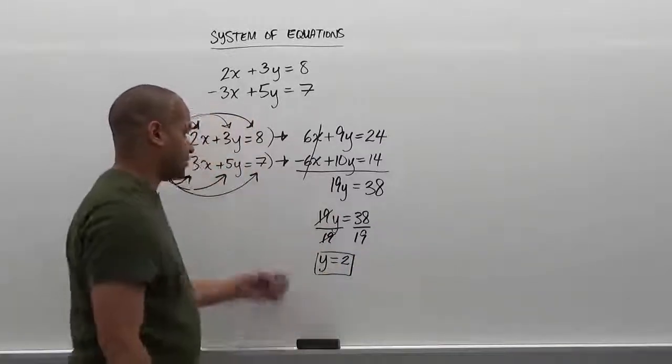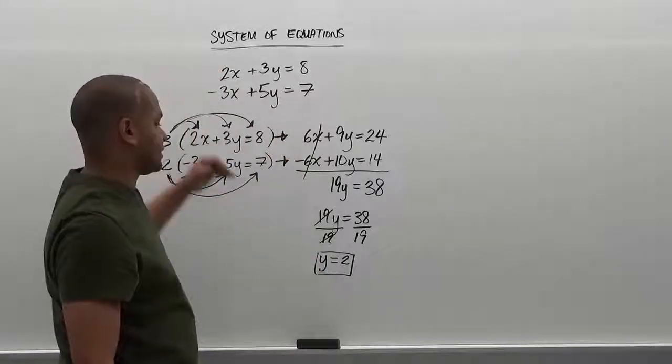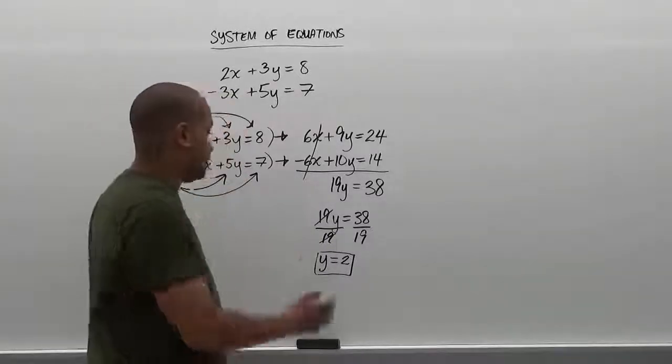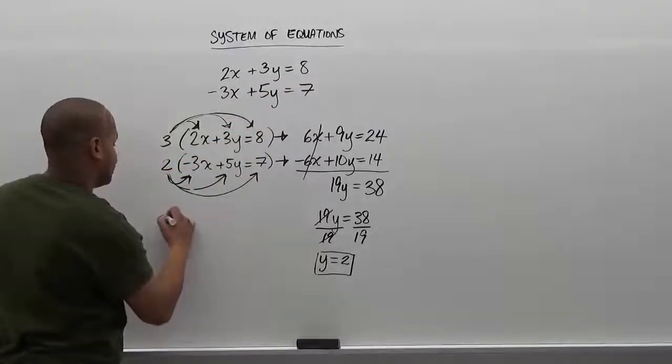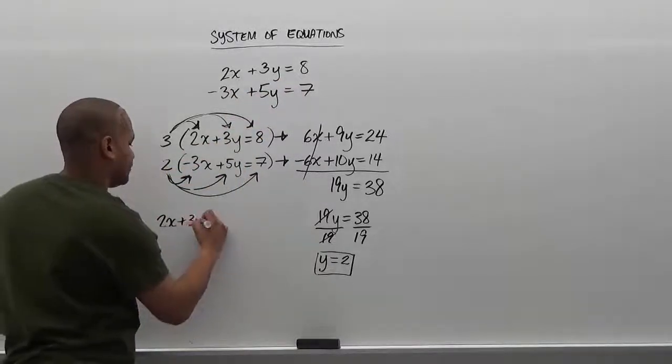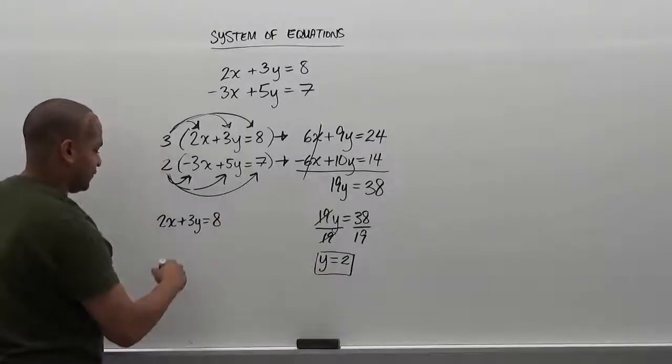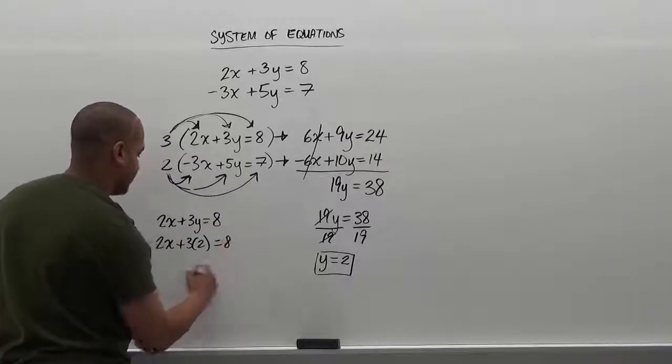There's our y coordinate for the solution, and now all we have to do is take one of the two original equations and substitute the value of y into it so that we can solve for the x value. We're going to take the first equation: 2x plus 3y equals 8. We're going to substitute the value of 2 for y. So we have 2x plus 3 times 2 is equivalent to 8.